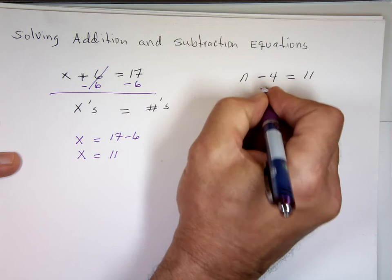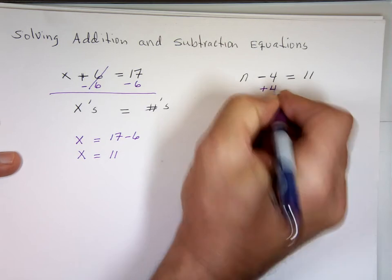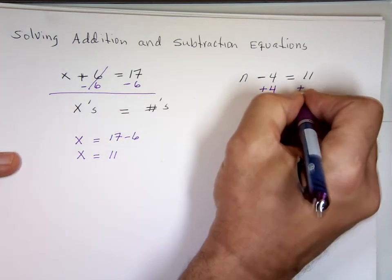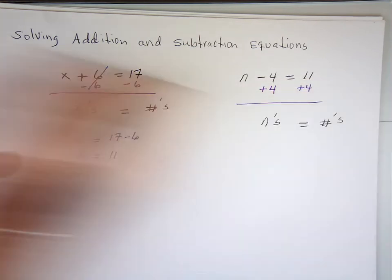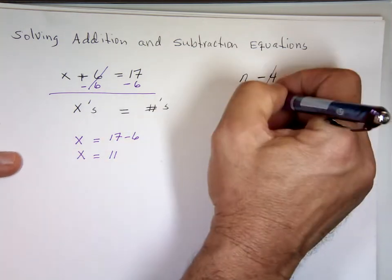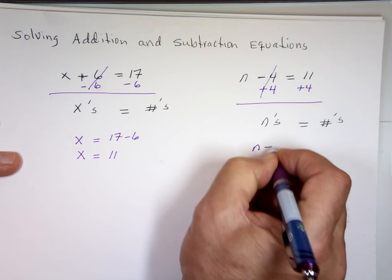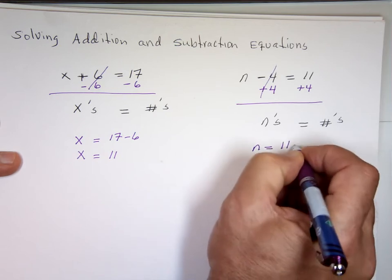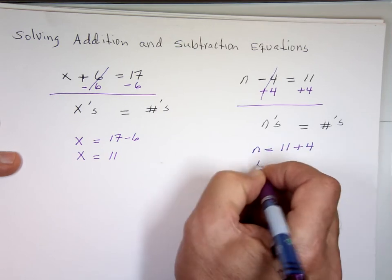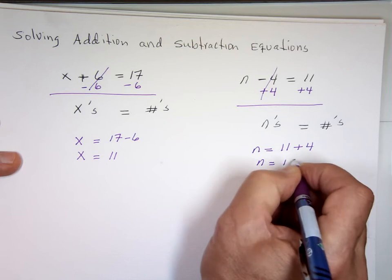You want to add. You do the opposite. Add 4 to this side. And if you add 4 to this side, you better add 4 to that side. n equals 11 plus 4. What's 11 plus 4? 15.